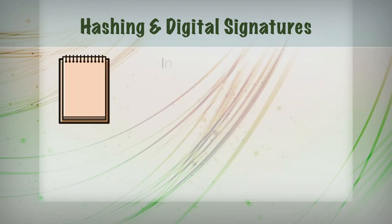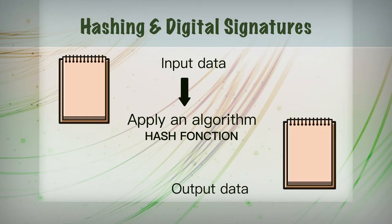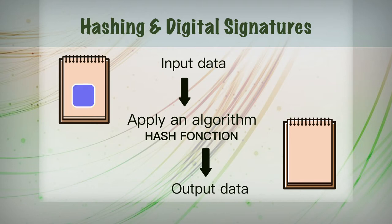Hashing is when you take a specific amount of input data, apply an algorithm or mechanism to it, and generate a fixed size of output data. The input, which is represented in bits, could be a spreadsheet, an audio file, or anything on the internet — it could be any size and infinitely big. The hashing algorithm takes any number of bits and transforms it into a standard amount of bits.